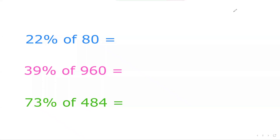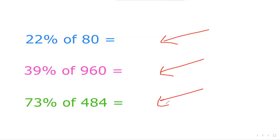Hi friends! In this video we will learn how to find out the percentage of any number without using a calculator. In the beginning we will try to find out simple percentages like 10 percent, 50 percent, 5 percent, and 1 percent. But once you understand the method, you'll be able to find out complex percentages like 22 percent of 80, or 39 percent of 960, or even 73 percent of 484 in just less than five seconds. So let's get started!